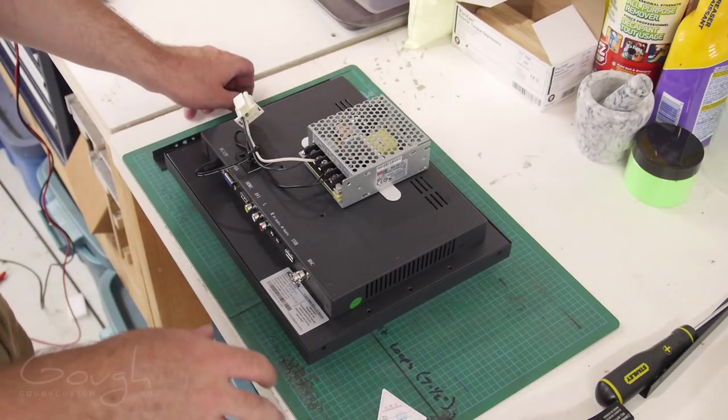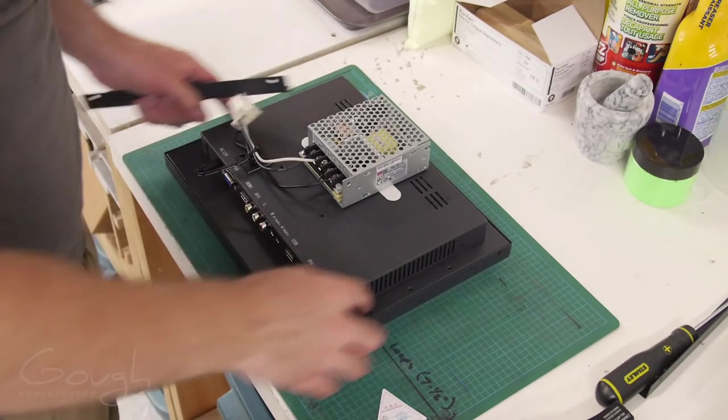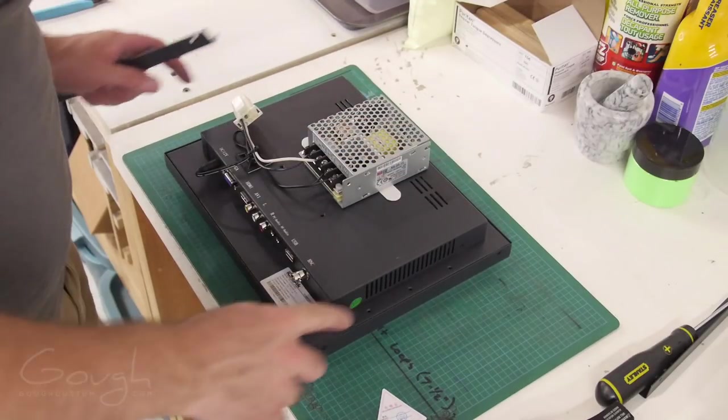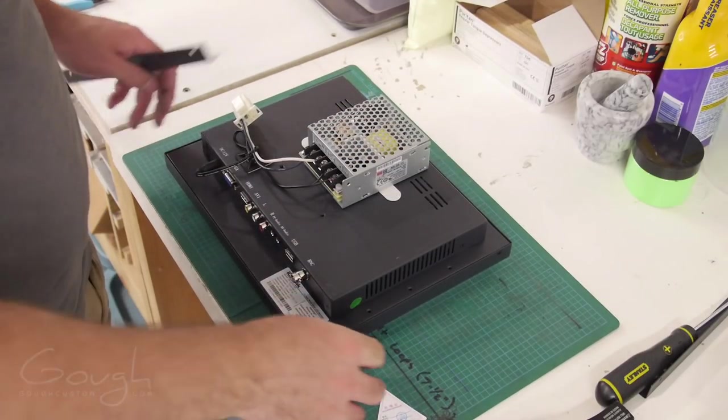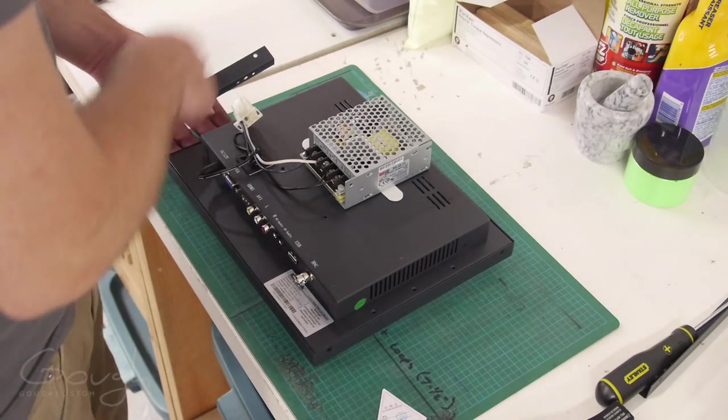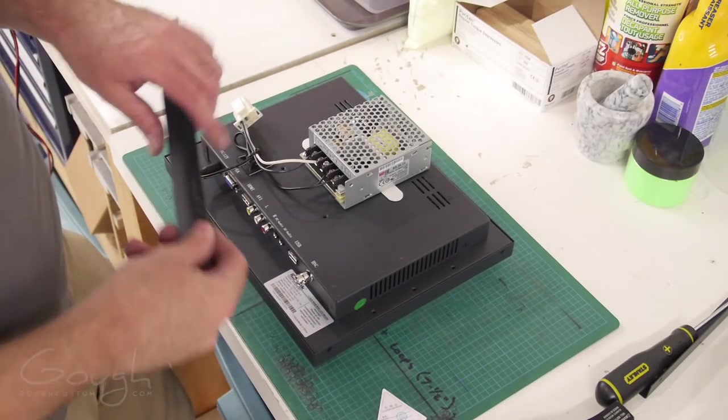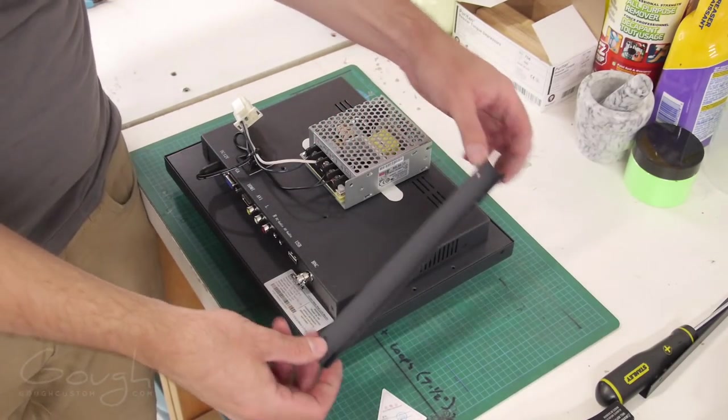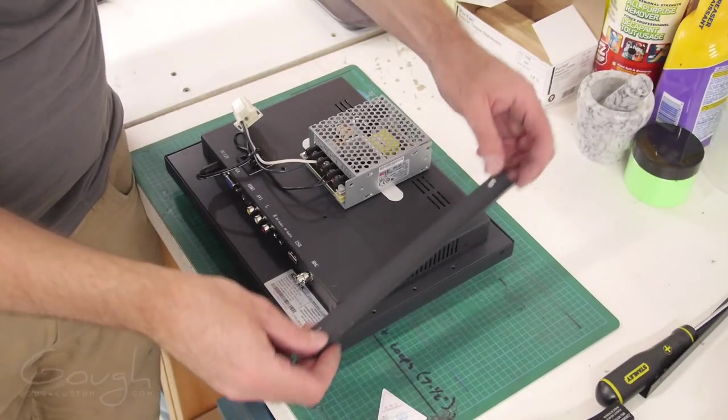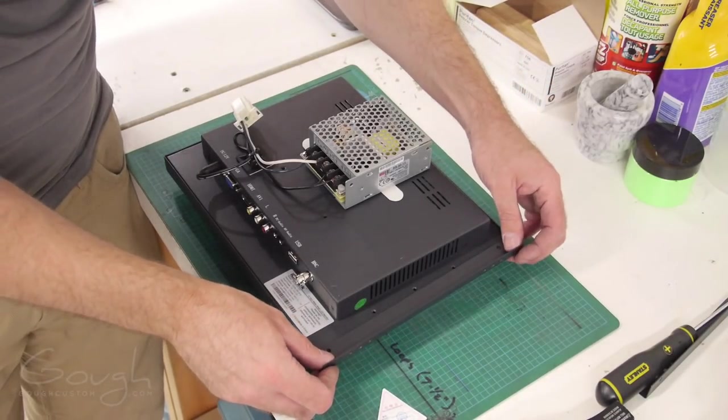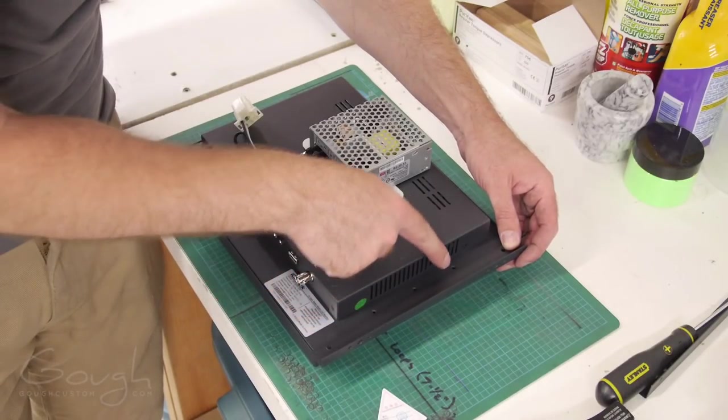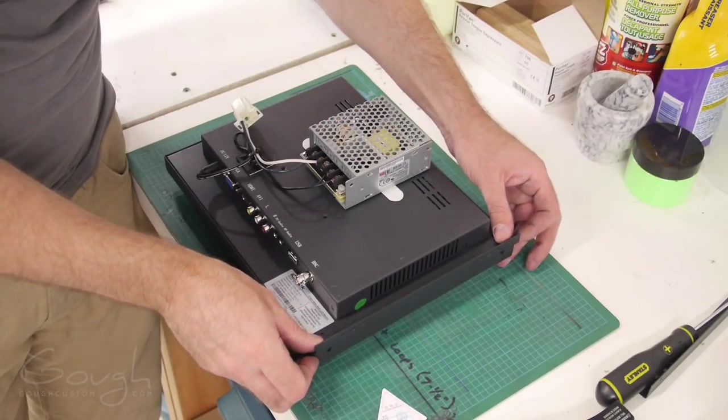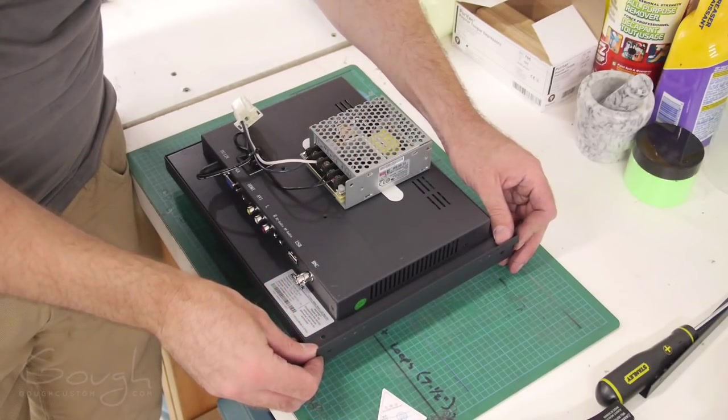Then the final thing that we need to do is make a way to actually mount this into the machine. The monitor is the exact right size for the hole that the CRT monitor came out of, but it doesn't have any mounting locations that we can use. So these are little mounting bars that came with the monitor. What I'm going to do is drill some holes through this to align with these little M2 holes here. And then this will form like a little clamping bracket on either side.